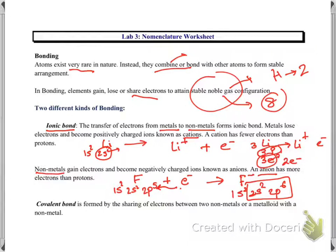So metals lose electrons and non-metals gain electrons. These positively and negatively charged ions come close to each other because of opposite charges and make an ionic bond. The second type of bonding is covalent bonding, which is formed by the sharing of electrons. It takes place between two non-metals or metalloids, and we're going to study covalent bond formation in detail in the next chapter.